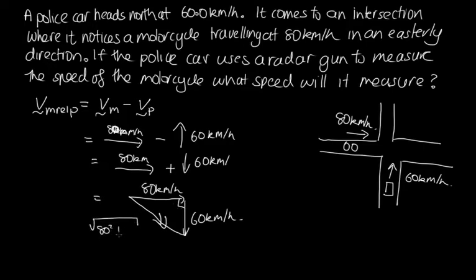It's 80 squared plus 60 squared, which when we solve that on the calculator, we end up with 100 kilometres per hour. So the radar gun is going to detect a speed of 100 kilometres per hour.